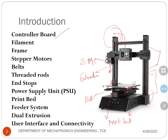The print bed is the surface on which 3D objects are printed. The feeder system — comprising the extruder, servo motor, and feeder pipe — is collectively known as the feeder system. Dual extrusion refers to a system with two nozzles; you can see the nozzle here. The user interface and connectivity include a power switch, SD card slot, and USB connectivity. Those are the components of a 3D printer.